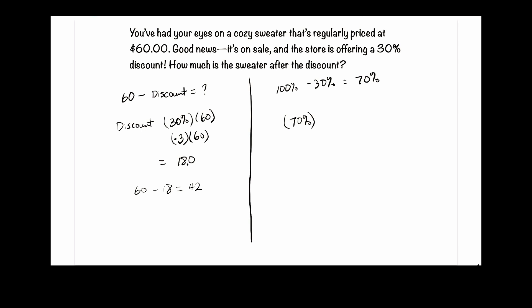That's 70% times sixty dollars. We can write 70% as 0.7, and 0.7 times 60 gives us 420. Remember, because we have one decimal place, we move the decimal one place to the left, giving us forty-two dollars as well. And that's it for this video — thanks for watching, see you next time.